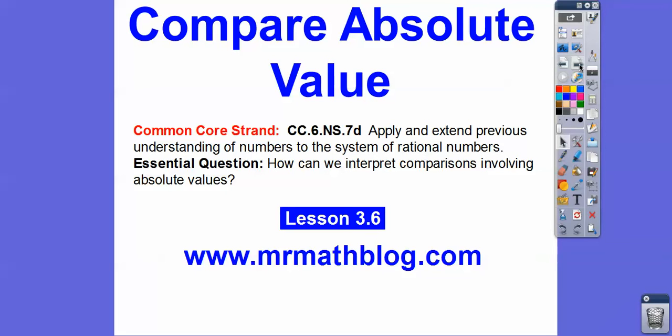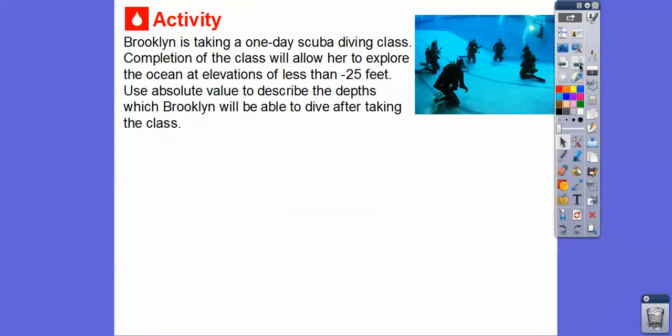Don't forget all your lessons can be found at MrMathLog.com. So Brooklyn is taking a one-day scuba diving class. Completion of the class will allow her to explore the ocean at elevations of less than negative 25 feet. We'll use absolute value to describe the depths which Brooklyn will be able to dive after taking the class. After the class, she's going to be able to go to elevations less than negative 25 feet.